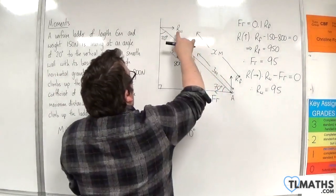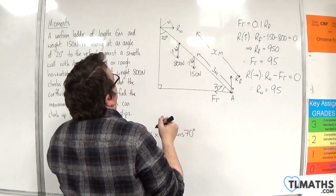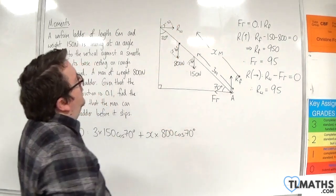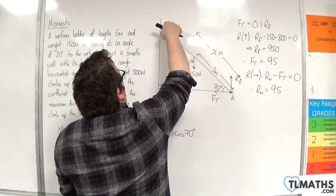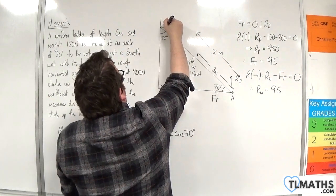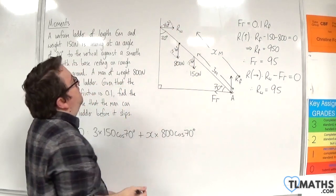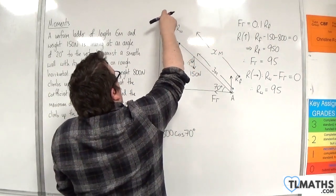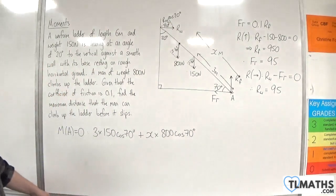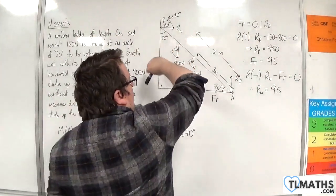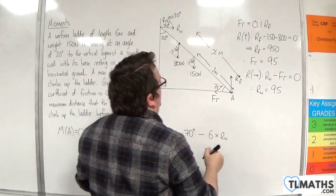Now, as for the normal reaction with the wall, let's complete that triangle there. Now, if that's 70, that's 70, so that must be equal to 20. So, alternate angles, and then that one in there, they've got to add up to 90. So, this component here is Rw cosine of 20 degrees, and we're 6 meters away from it, and it's going around in a clockwise motion. So, take away 6 times Rw cosine 20.